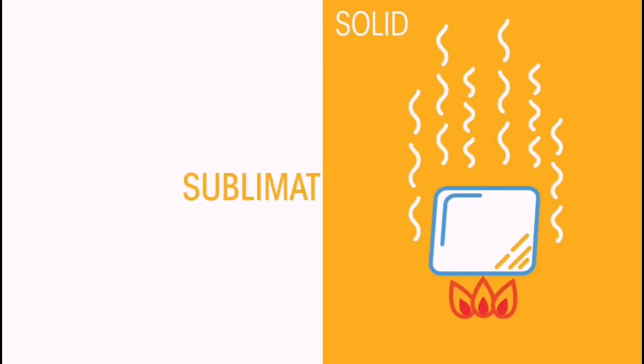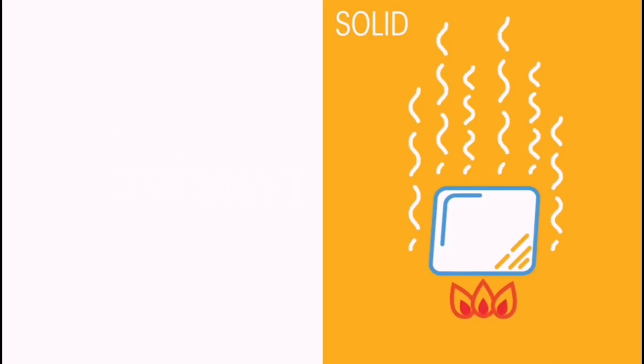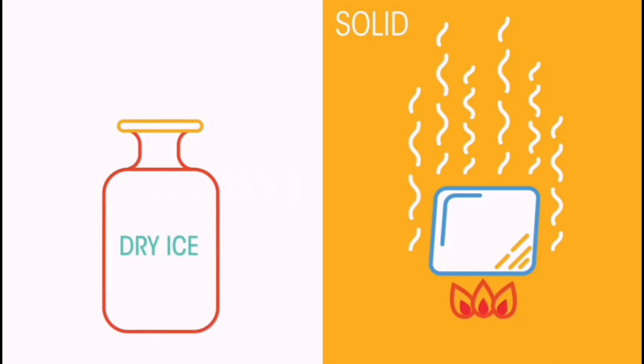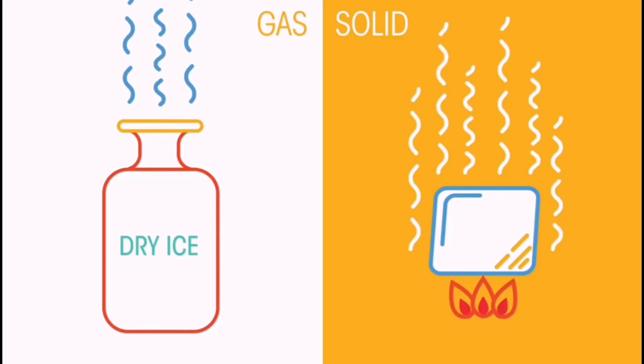Did you know that sometimes when solids are heated, they can turn straight into gases? This is called sublimation. This is demonstrated by particular materials such as solid carbon dioxide, also known as dry ice. When subjected to a certain pressure, it will turn straight into gaseous carbon dioxide. Liquid carbon dioxide does exist, but it only occurs under very high pressures. Similarly, gases can turn straight into solids when cooled — this is called deposition.